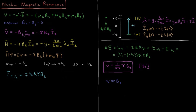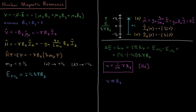Next we're going to assume that this magnetic field is only in the z direction — we assume that Bx and By are equal to zero. So now our potential energy, when we set these two terms to zero, is going to be equal to negative Bz times μz.